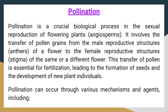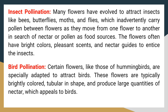Pollination is a crucial biological process in the sexual reproduction of flowering plants and angiosperms. It involves the transfer of pollen grains from the male reproductive structures, anthers, of a flower to the female reproductive structures, stigma, of the same or a different flower. This transfer of pollen is essential for fertilization, leading to the formation of seeds and the development of new plant individuals. Pollination can occur through various mechanisms, including insect pollination. Many flowers have evolved to attract insects like bees, butterflies, moths, and flies, which carry pollen between flowers as they move in search of nectar or pollen as food sources. The flowers often have bright colors, pleasant scents, and nectar guides to entice the insects.